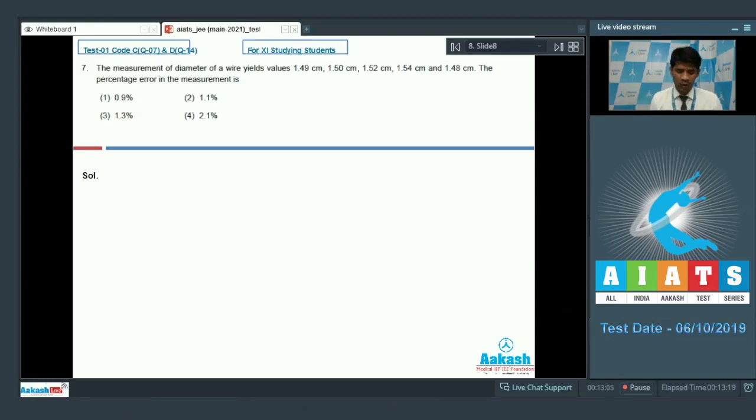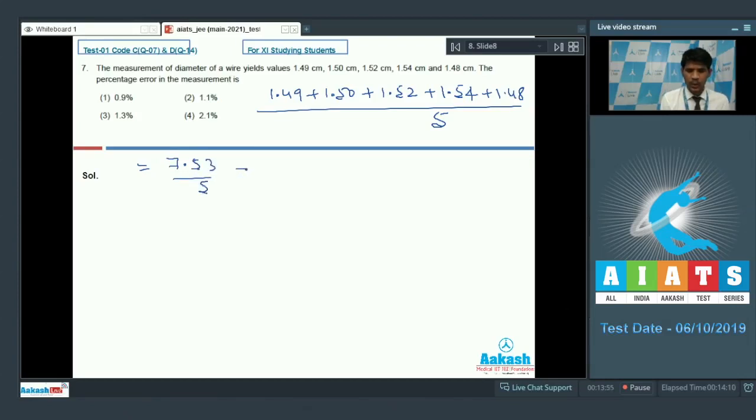First we need to calculate the average of the measurements here, simply 1.49 plus 1.50 plus 1.52 plus 1.54 plus 1.48 divide by 5. 7.53 divide by 5 that will be equal to 1.506, and taking due care of the significant digit it has to be presented as 1.51. This is the average value now.